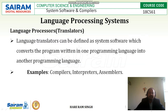Next is the language processing system. Another type is the translator. A language translator can be defined as system software which converts a program written in one programming language into another programming language. Translators are tools that convert one programming language into another; examples include compilers, interpreters, and assemblers.